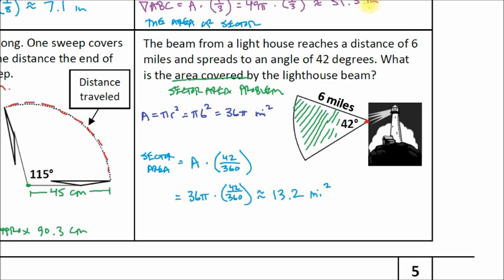So to write that answer as a sentence, you're going to write the area covered is, and you can finish this sentence, the area covered is approximately 13.2 miles squared. And that's the end of these practice word problems. One more thing.